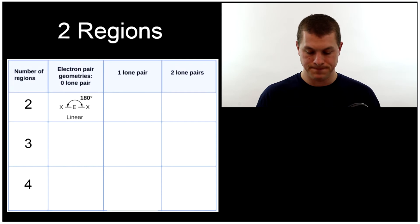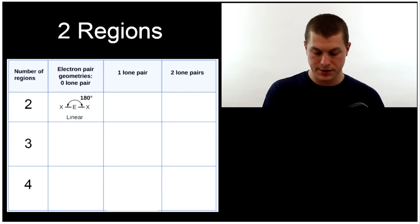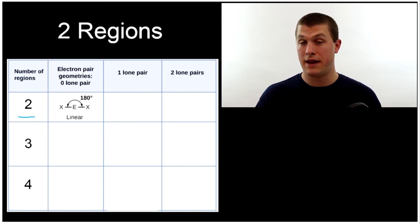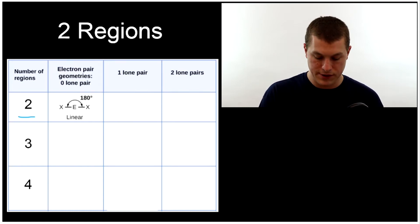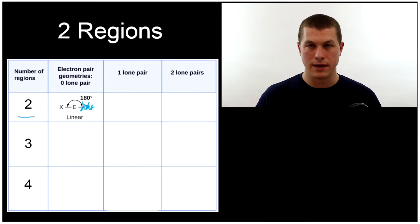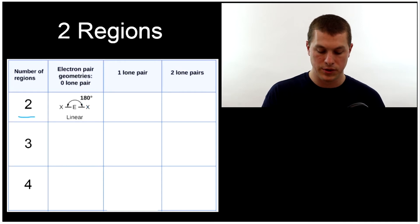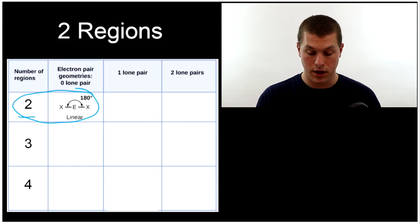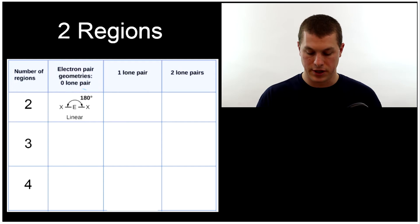First and most straightforward: if we have two regions of electron density, there's no way to have lone pairs and still have a central atom. If I replace one of those with a lone pair, I no longer have a central atom — I just have two atoms as a diatomic molecule. So there's not even a one-lone-pair option here; we just have a linear molecule with atoms arranged in a linear fashion with a 180-degree bond angle.